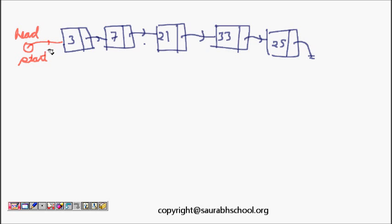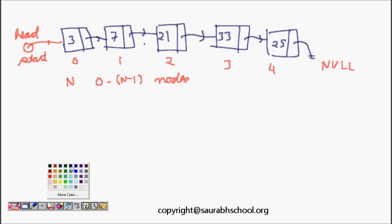Now let's have some strategy of indexing. Let's say this is the 0th node, 1st node, 2nd node, 3rd node, and 4th node. So if we have a linked list of size N, it will be ranging from 0 to N-1 nodes.